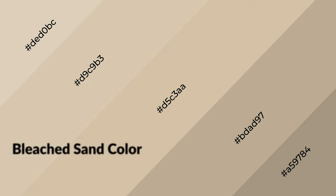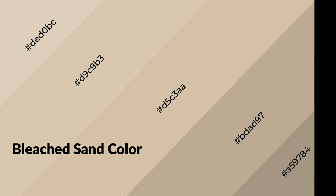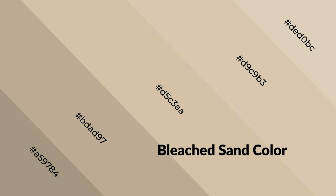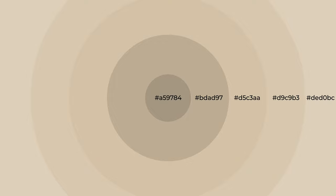Bleached sand is a warm color and it emits cozier and active emotions. Warm colors are symbols of warmth, fire, heat, and sunshine. It also evokes joy, passion, love, and even anger emotions. You can see them used in restaurants and gyms.